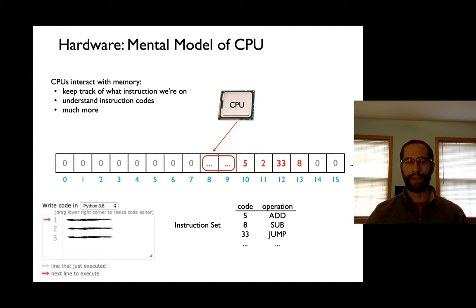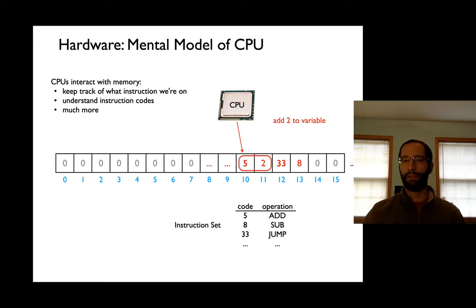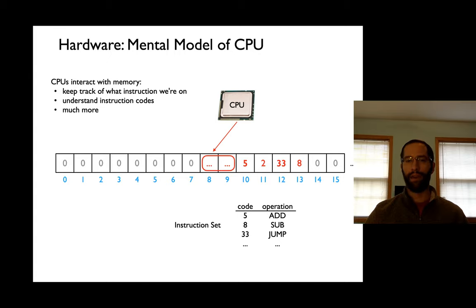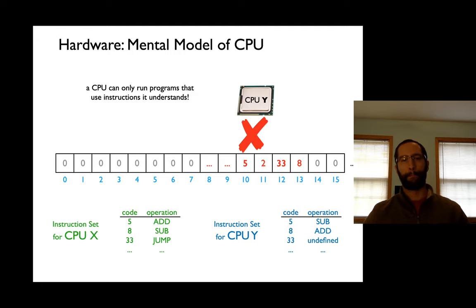As the program runs, the CPU moves the instruction pointer forward. It sees the add instruction, adds 2 to the variable, then sees the jump instruction and goes back to the top of the loop. The CPU keeps track of what code it's currently running, and has this instruction set so it knows which numbers mean which operations to perform.